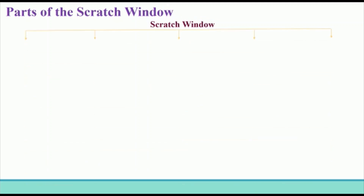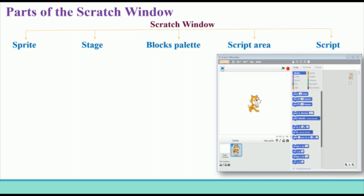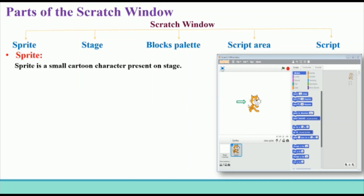The Scratch window has the following parts: Sprite, Stage, Block Palette, Script Area, and Scripts. Sprite is a small cartoon character present on the stage. The default sprite or cartoon character in Scratch is the cat. Scratch has many built-in sprites which you can add or remove from a project.